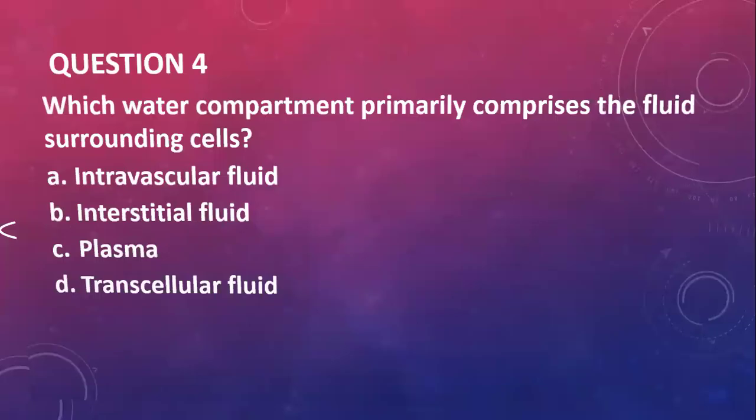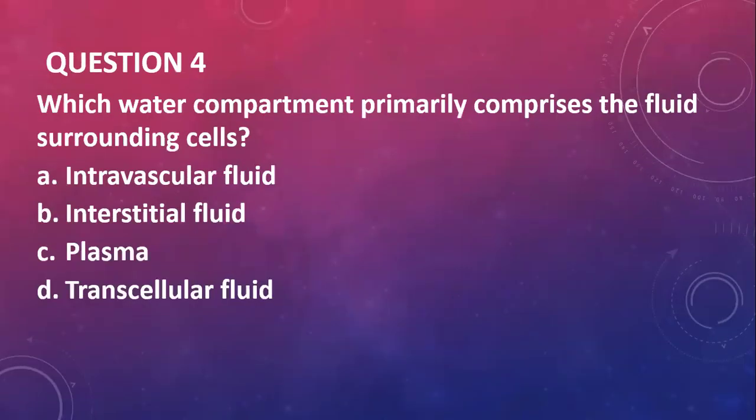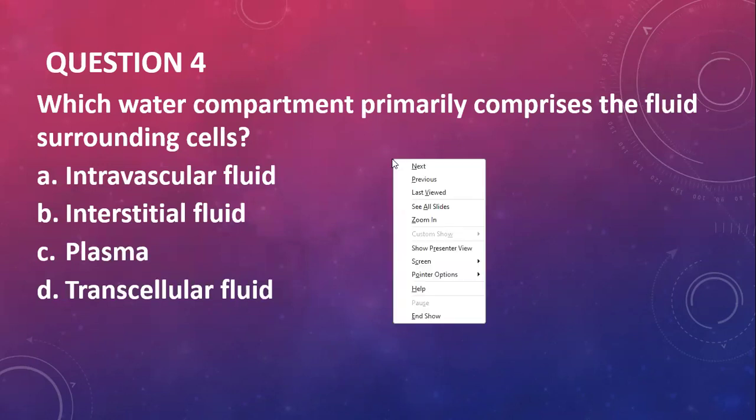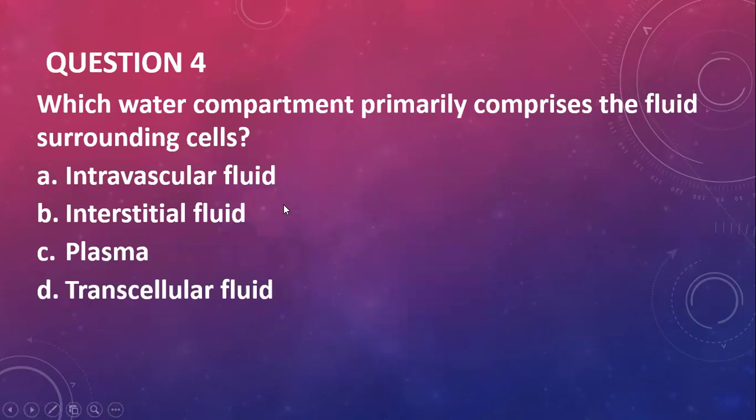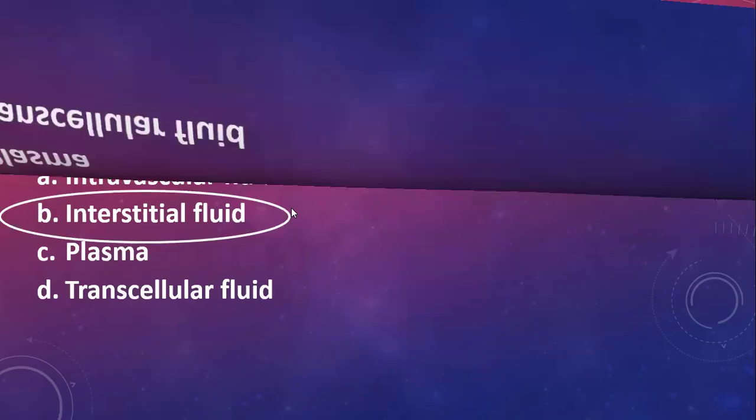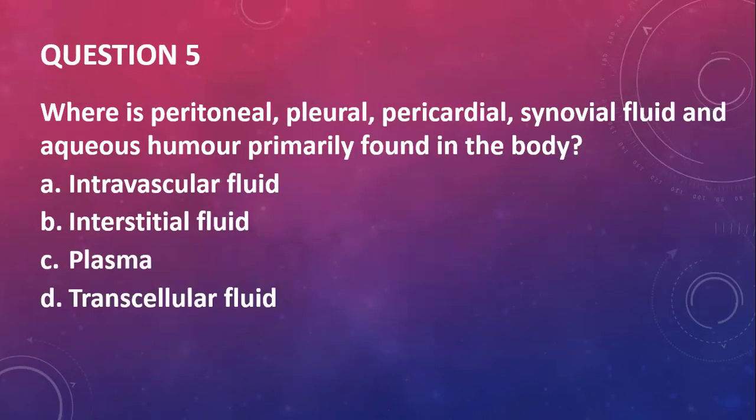Question four: which water compartment primarily comprises the fluid surrounding cells? The fluid that covers the cell is called the interstitial fluid. Question five: where is the peritoneal, pleural, pericardial, synovial, and aqueous humor primarily found? I just gave you the answer to that. If you say transcellular, you are right.